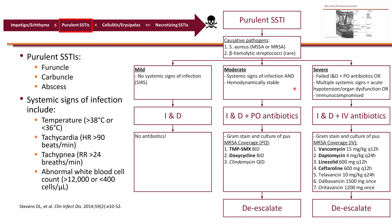If there are systemic signs of infection and the patient is hemodynamically stable — moderate disease — in addition to incision and drainage, the patient will receive oral antibiotics primarily targeting MRSA: TMP-SMX or doxycycline, and clindamycin as a last choice due to increasing resistance rates and greater collateral damage, particularly C. difficile. If culture results are available, we want to de-escalate treatment accordingly.